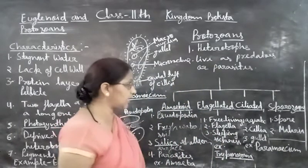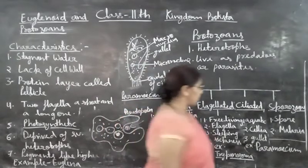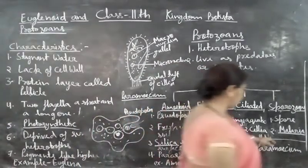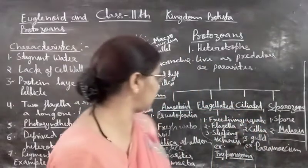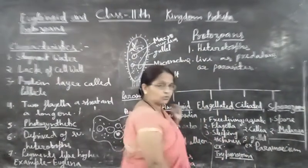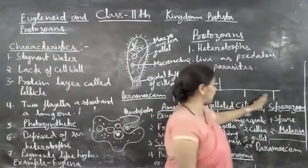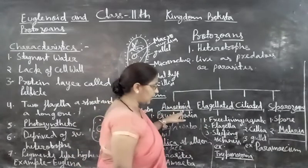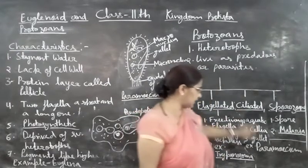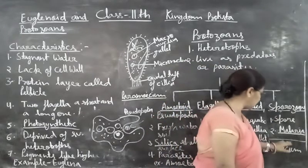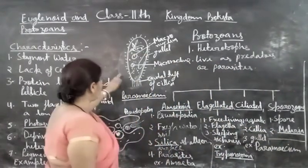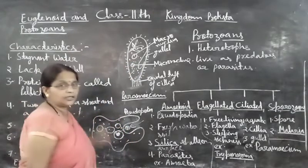The next organism is sporozoans. In their life cycle, spores are formed and they are parasitic in nature. Sporozoans are the malaria-causing organisms. So, protozoans consist of four types: amoeboid — example amoeba; flagellated — example Trypanosoma; ciliated — example Paramecium; and sporozoans — example Plasmodium, which causes malaria in human beings. So this covers euglenoids and protozoans.